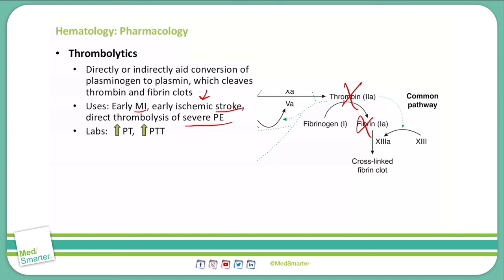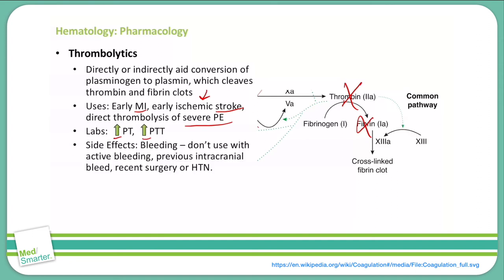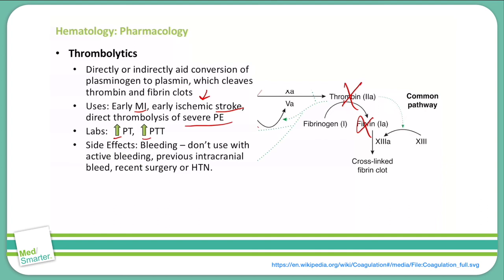We'll check lab values for PT and PTT with thrombolytics, and you will see that both of them will increase. Side effects are bleeding. We don't want to use this if there's an active bleed — so in a hemorrhagic stroke, we're not going to use it. If we do have an ischemic stroke but have other issues of bleeding elsewhere in the body, that's going to be a contraindication to using a thrombolytic, because while it can help with the clot in the brain, it can make the bleeding elsewhere in the body worse.